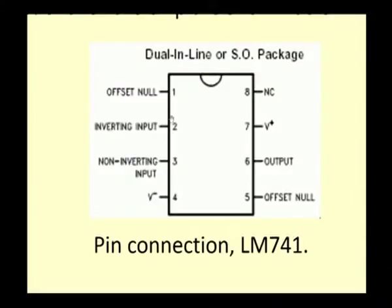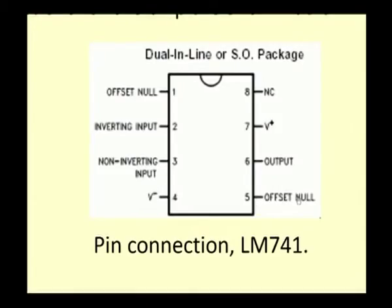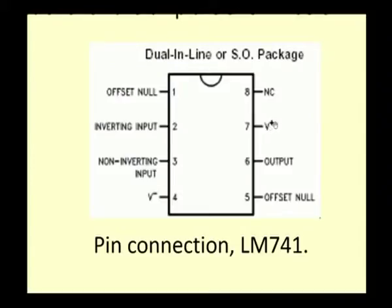We will see the pin configuration of the 741 op-amp. Pin number 1 is the offset null — if you have any offset current or offset voltage, we can connect a compensating resistance from pin 1 to ground. Pin number 2 is the negative or inverting terminal. Pin number 3 is the positive or non-inverting input. Pin 4 is negative supply, connected to minus 15. Pin 5 is again offset null. Pin 6 is the output voltage, pin 7 is connected to positive supply plus 15, and pin 8 is no connection.